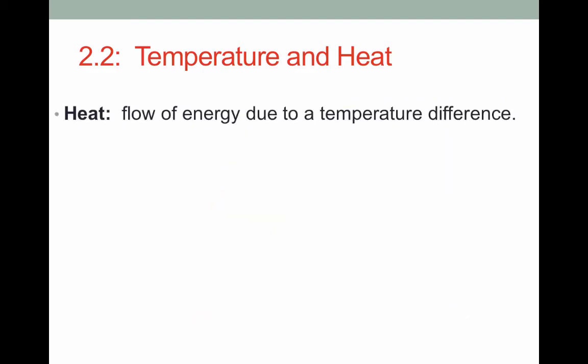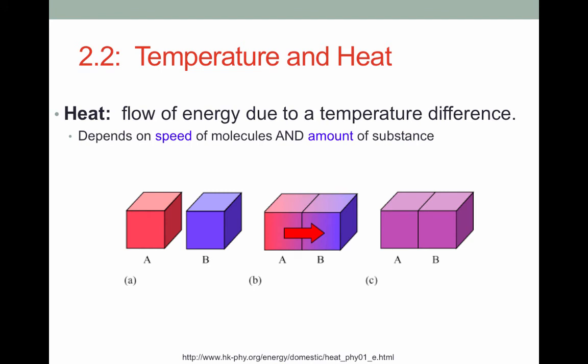Heat, on the other hand, is the flow of energy due to a temperature difference. We mess up the use of heat all the time. We refer to heat as a noun, as a thing. But heat is really a verb. It's the flow of energy. When you have two objects at different temperatures, and you put them together, as we've done here, the energy will flow from the hot object to the cold object. This process is called heating. This process depends on the speed of the molecules and the amount of the substance.